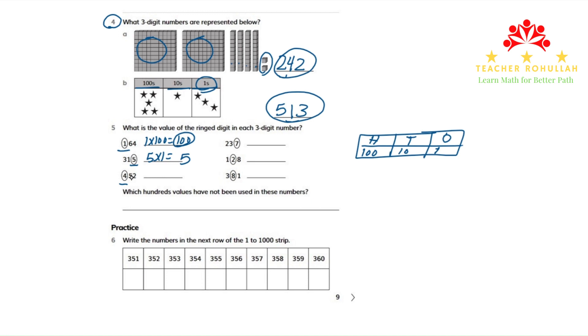And the third number, the ringed digit is 4. So 4 is in the 100s place. Because it's in the 100s place, we will multiply it by 100. So the value of 4 in the 100s place will be 400.